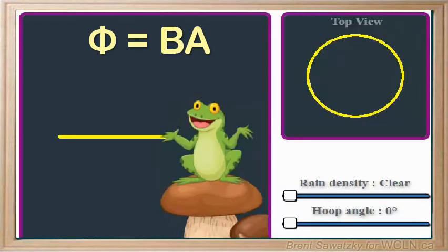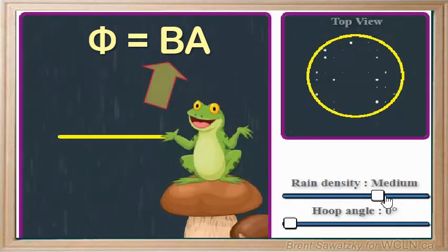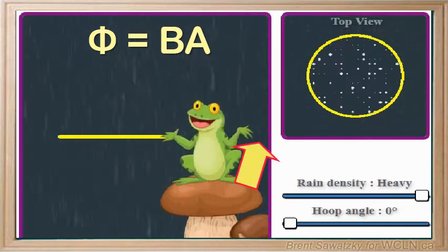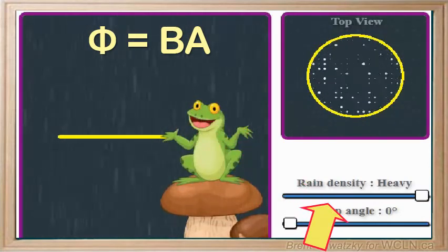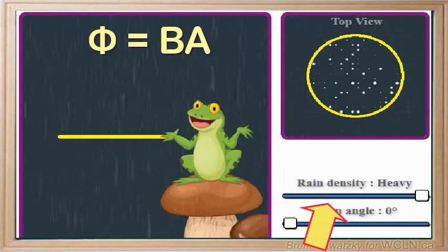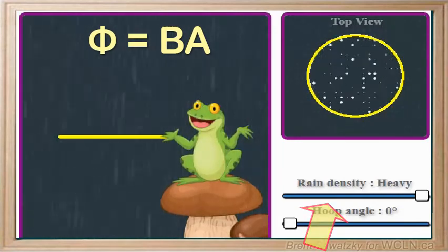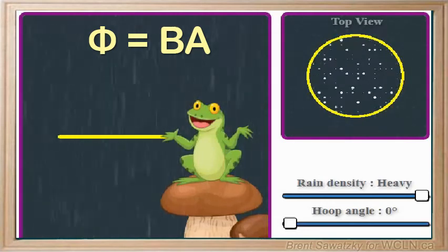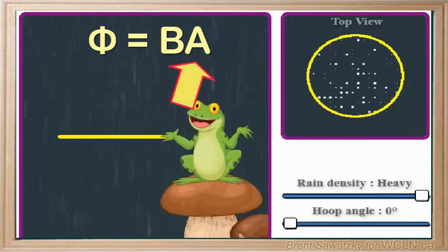A hula hoop in a rainstorm. The rain represents our magnetic field. According to our equation here, the greater the magnetic field strength B, the more rain passing through the loop, and the greater the flux. The hula hoop itself represents our loop surrounding the area that we're considering.